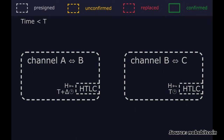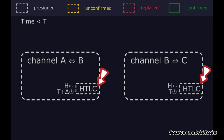To ensure Bob has time to react if something goes wrong, the time lock on the outgoing HTLC expires first at some block height T, then the time lock on the incoming HTLC expires at some later height T plus Delta, after which Alice can reclaim her money. So here's the attack. Remember, Bob has HTLCs pending in two channels: one outgoing HTLC to Carol which expires at block T, and one incoming HTLC from Alice which expires at block T plus Delta.